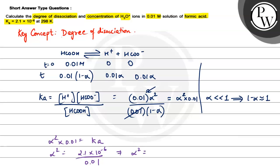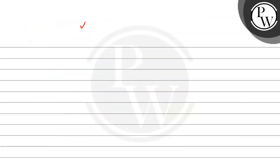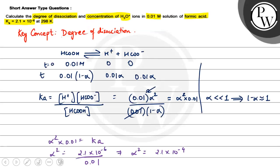This implies alpha squared is going to be equal to 2.1 into 10 to the power minus 4. So alpha is going to come out as 1.45 into 10 to the power minus 2.